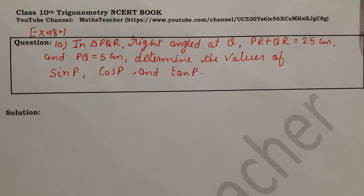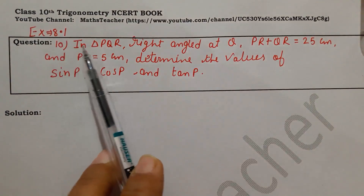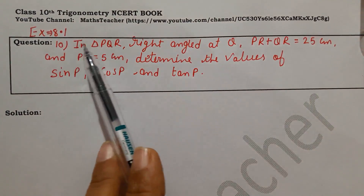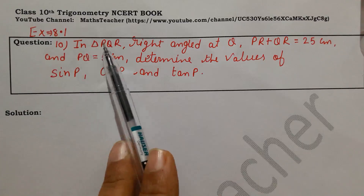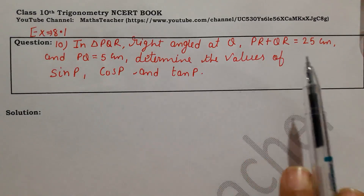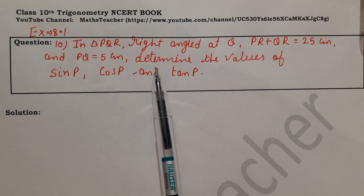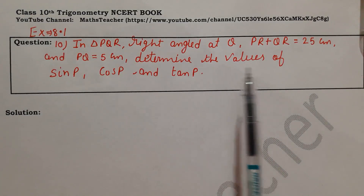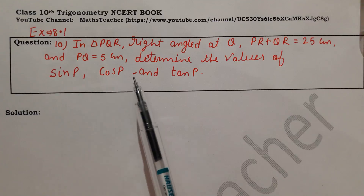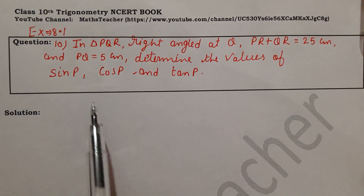Hello viewers, welcome to my channel. I am Rashmi, your maths teacher. We will now solve Exercise 8.1, Question number 10, which is: In triangle PQR, the right angle is at Q. PR plus QR is 25 cm and PQ is 5 cm. Determine the value of sin P, cos P, and tan P.